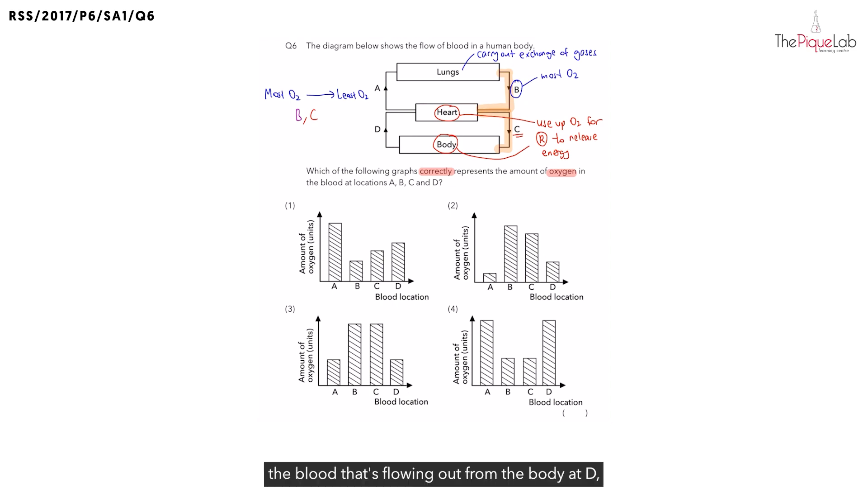So because of that, the blood that's flowing out from the body at D, is it going to have more or less oxygen than C? It is going to have less oxygen. So let's write this down.